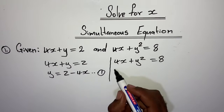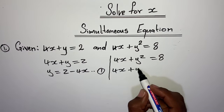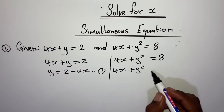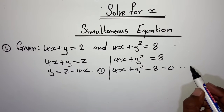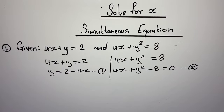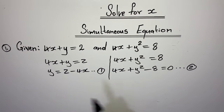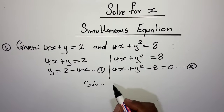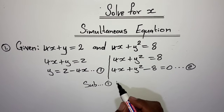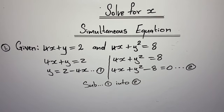You'll just have to take the 8 to the other side: 4x plus y squared, take your 8 to the other side — the sign will have to change — you equate it to 0. Then you make that to be your second equation. From here, you've made y the subject of the formula. The next step is to substitute equation 1, the one you created, into equation 2.